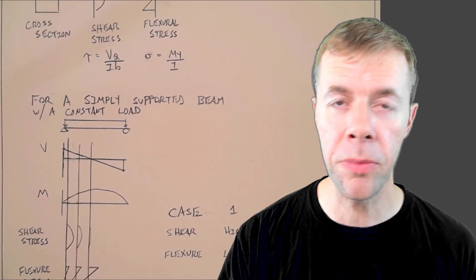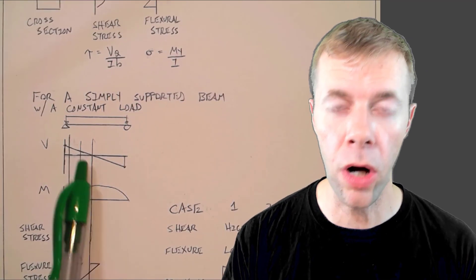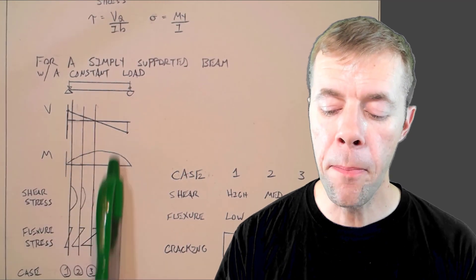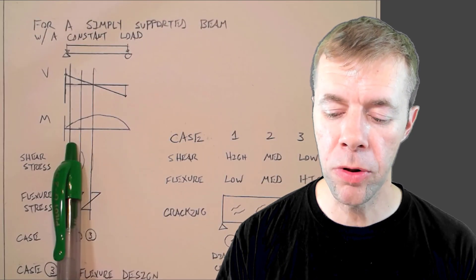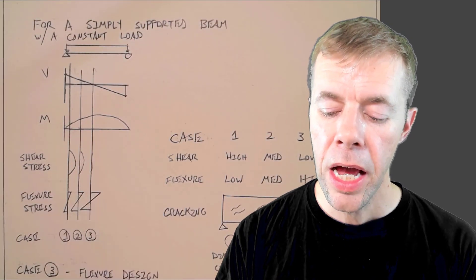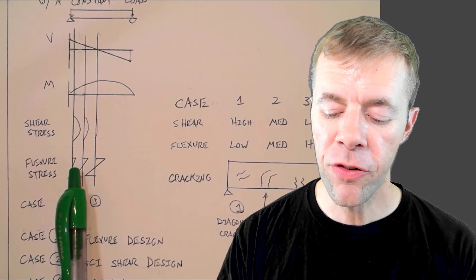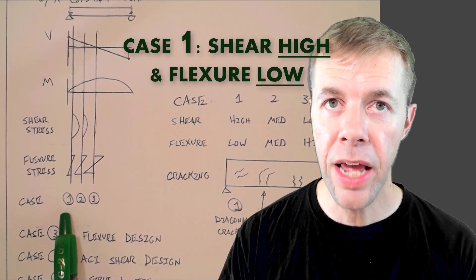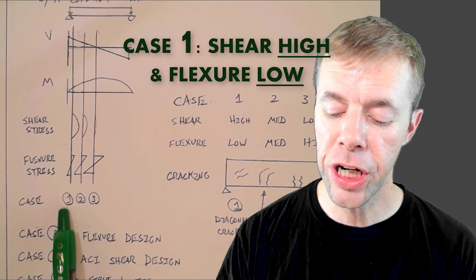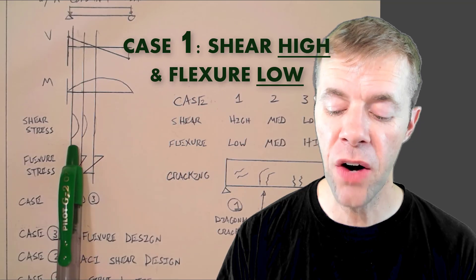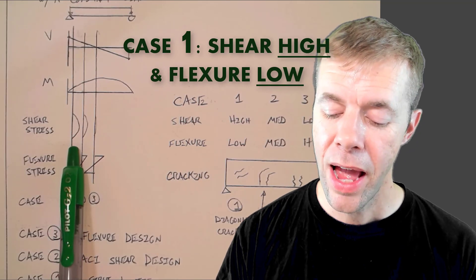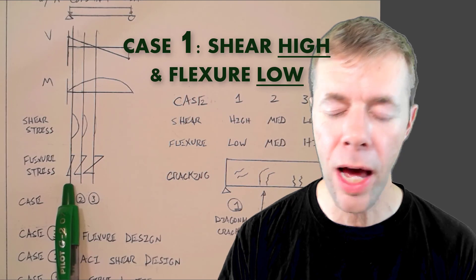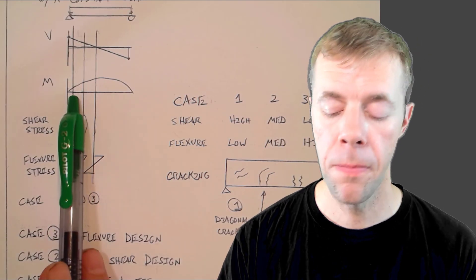For a simply supported beam with some kind of constant load on it, this is what the shear diagram would look like, and this is what the moment diagram would look like. At different places along the beam — here's Case 1, at the very end — that's where shear is very, very high and flexure is kind of low. How do I know that? Because the moment is low.